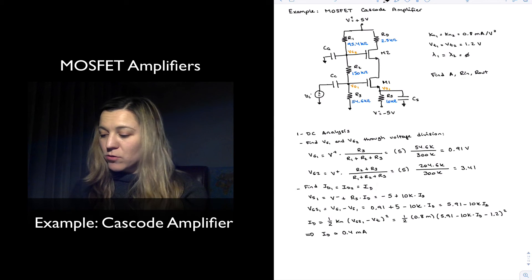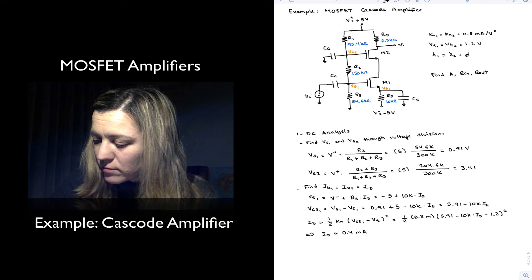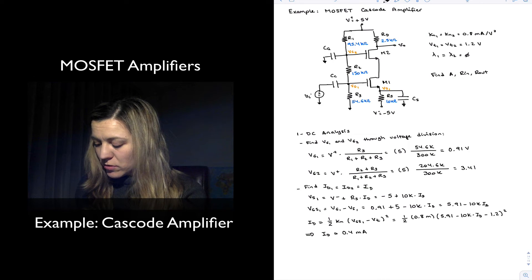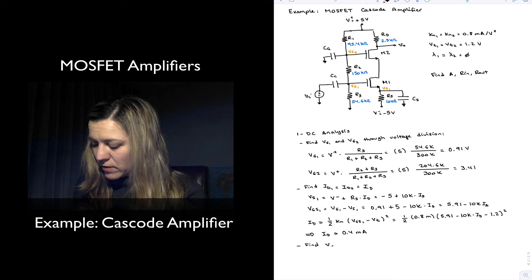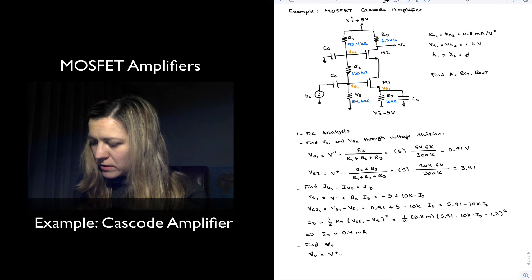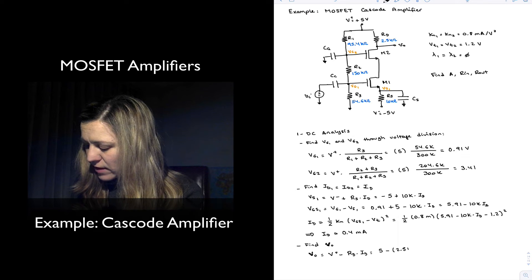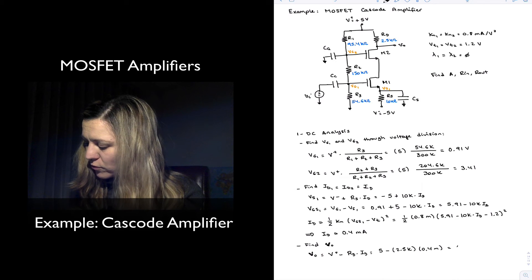With that, I can find the value of the output voltage, which is taken at the drain of M2. Vout is going to be equal — and this is the DC value — to V+ minus Rd times ID, which is 5 minus 2.5k times 0.4m, giving 4 volts.